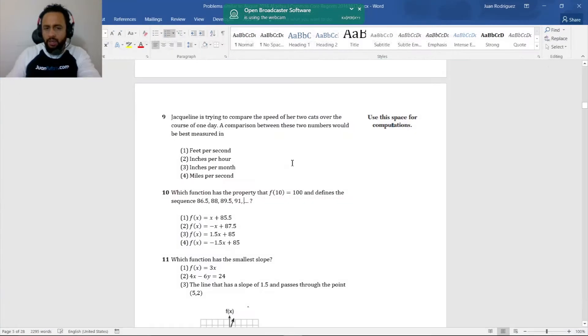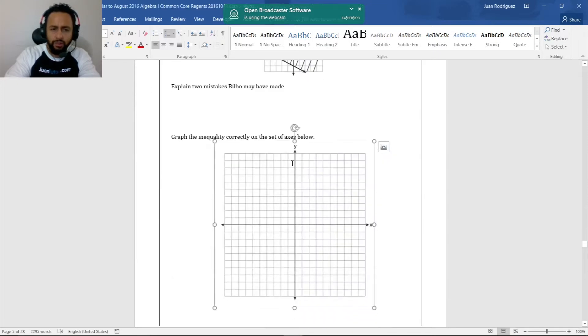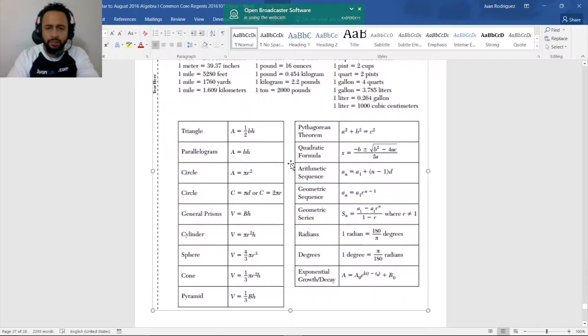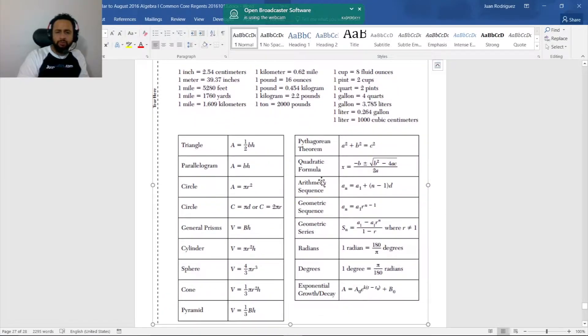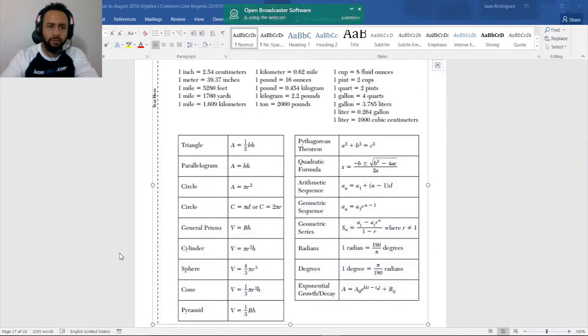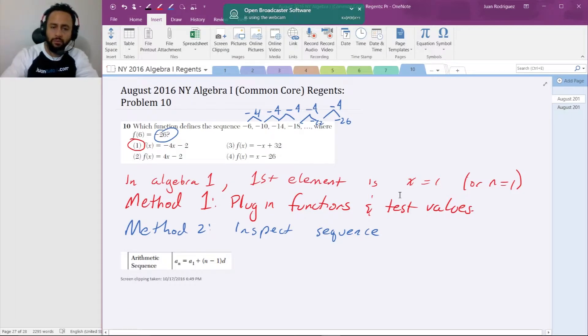Let's see what is available to me in the formula sheet. I'm going to scroll down. This is my version of the test. Here's my formula sheet, the same formula sheet available to you in the Regents. I see an arithmetic sequence, it's right here. Get yourself familiar with that formula sheet so you know that it's available. a_n is equal to a_1 plus n minus 1 times d. The d is the common difference.